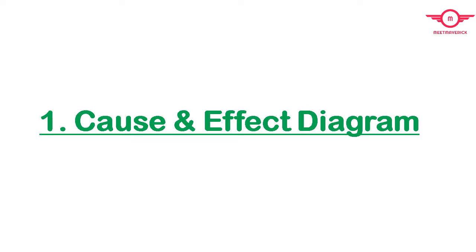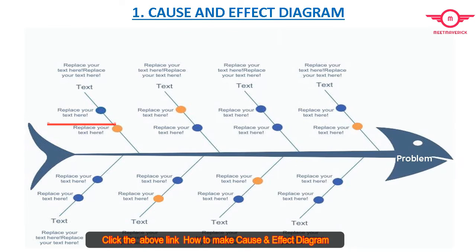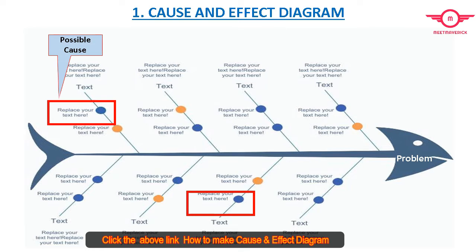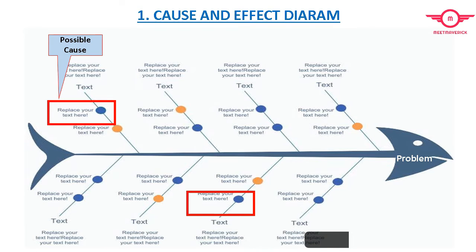The first tool is the Cause and Effect Diagram. It is a graphical tool used to identify the possible causes of a particular problem in different categories. This tool was introduced by Karou Ishikawa, so this diagram is also called the Ishikawa Diagram or Fishikawa Diagram. It is also known as the Fishbone Diagram or Herringbone Diagram. This diagram looks like a fish skeleton and is used to search out and organize all possible factors for a problem.